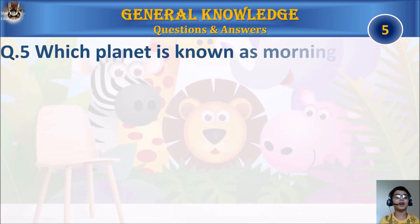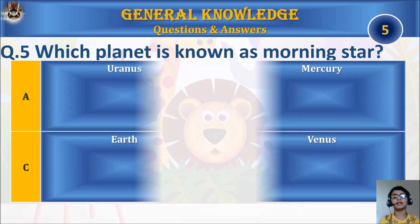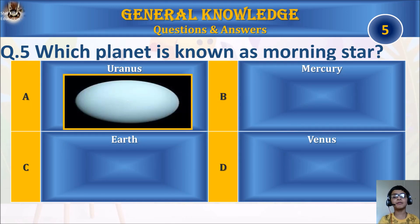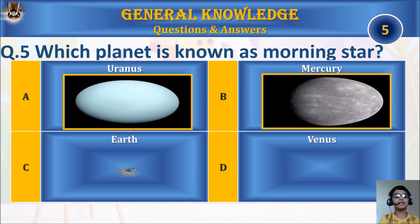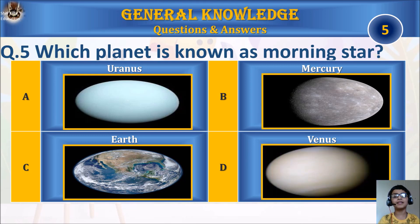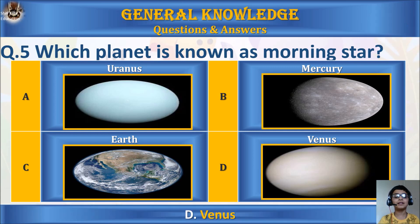Question 5: Which planet is known as morning star? A. Uranus, B. Mercury, C. Earth, or D. Venus? Your time starts. The answer is D. Venus.